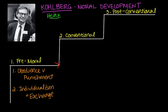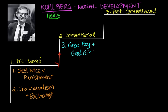At the conventional stage, there are two more steps. Authority is internalized but not questioned, and reasoning is based on the norms of the group to which the person belongs. Stage three is called good boy and good girl — the individual is good in order to be seen as good by other people. There is an emphasis on conformity, being nice, and consideration of how choices influence relationships.